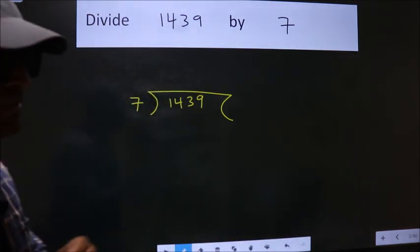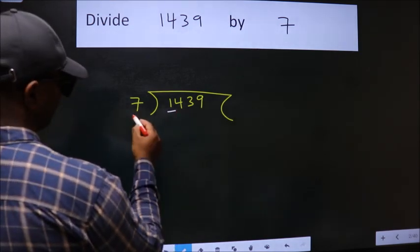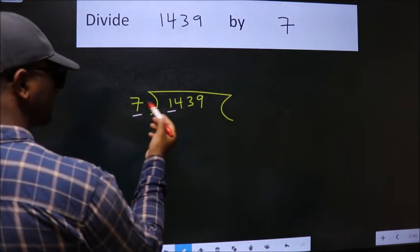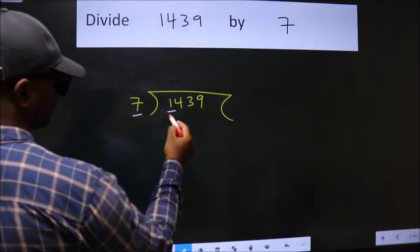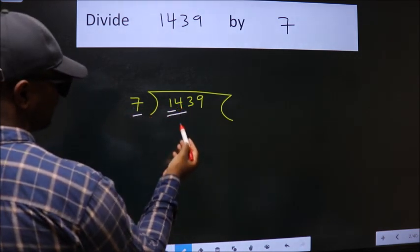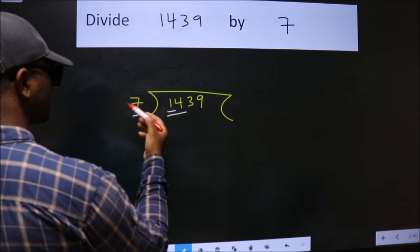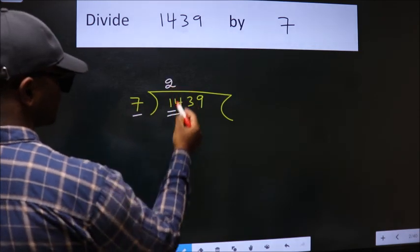Next, here we have 1, here 7. 1 is smaller than 7, so we should take two numbers: 14. When do we get 14 in 7 table? 7 twos 14.